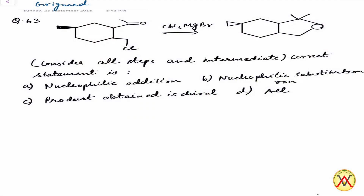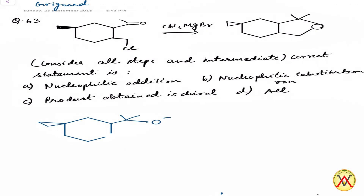In this question a reaction is given and we have to identify the correct statement regarding this reaction. Let's look at the reaction. In the first step, the Grignard reagent is a nucleophile — it will attack the ketone group to form an intermediate, which undergoes an intramolecular SN2 type reaction to form the given compound, let's call it A.